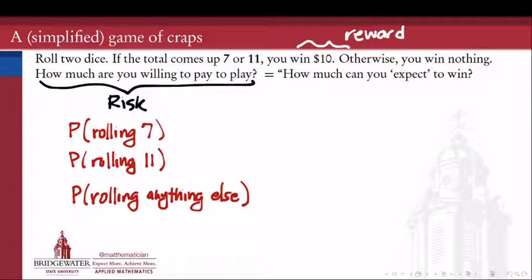Because if I roll a 7, then I win, I get $10. If I roll an 11, then I win, again $10. If I roll anything else, I get nothing. I lose. My amount of winnings are a 0.